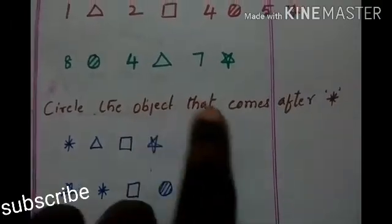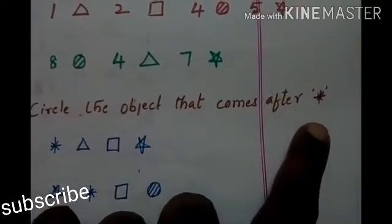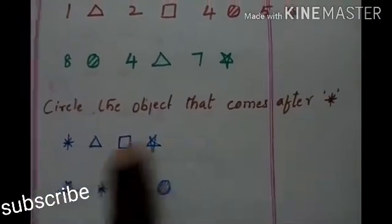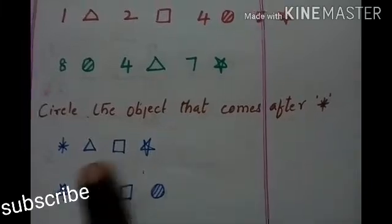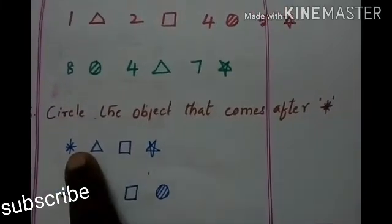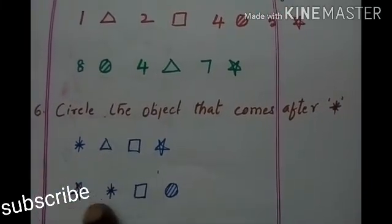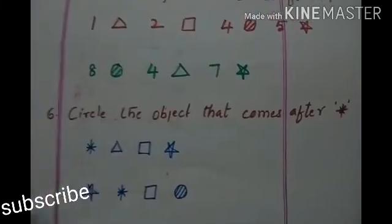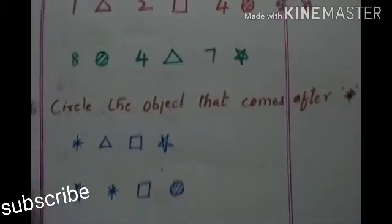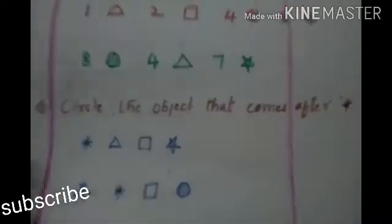Circle the object that comes after star. Where is this star? Here it is — what came? Triangle. Here it is square. Are you clear about these children?